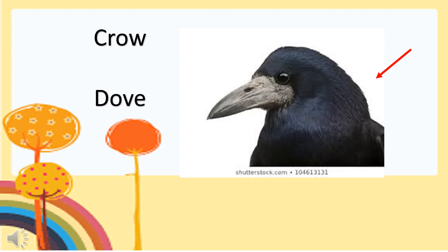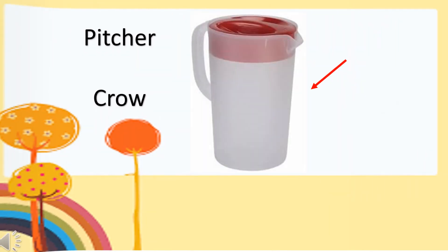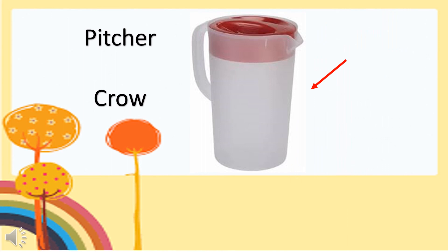This is a very familiar object. This is commonly found in kitchens, inside the left, and in the dining tables. What kind of an object is the arrow pointing to? Is it called a pitcher or is it called a crow? What is your answer?